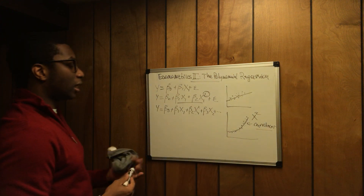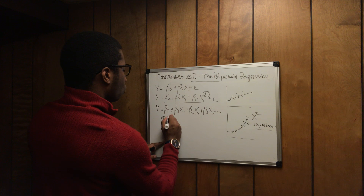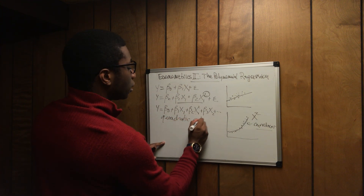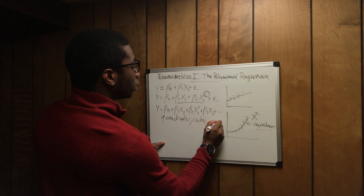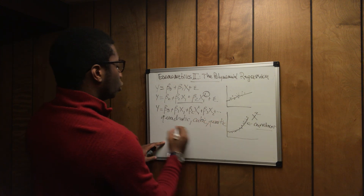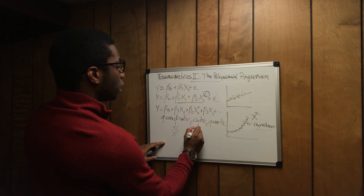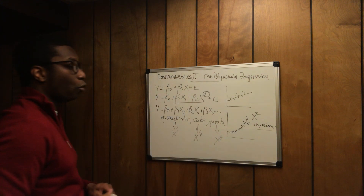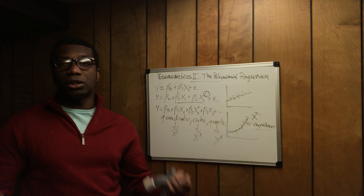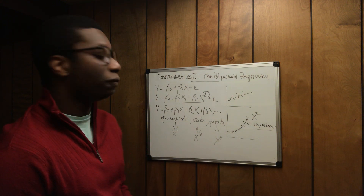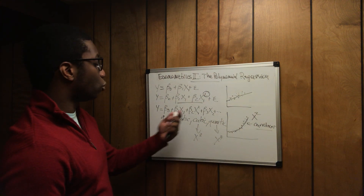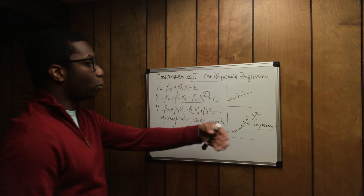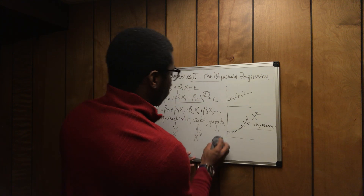So you basically have quadratic, cubic, and quartic. Quadratic is x to the power of 2, cubic is x to the power of 3, and quartic is x to the power of 4. It depends on the kind of data you're dealing with, and based on that you will know whether it's a multiple polynomial regression you're going to apply or not.